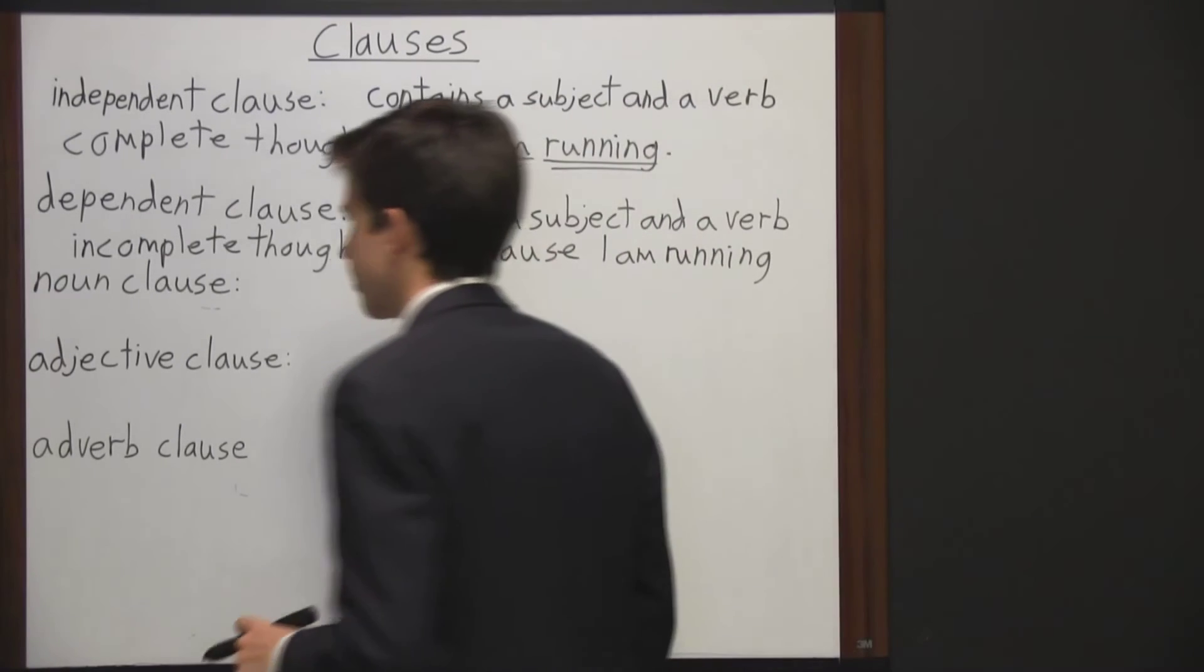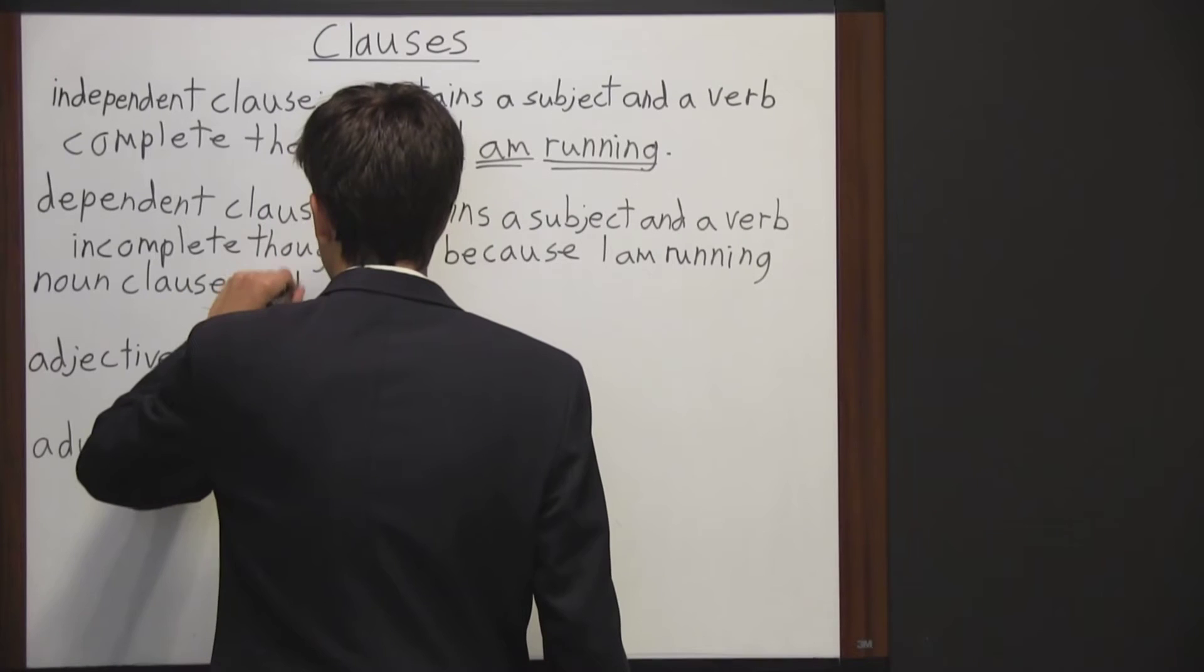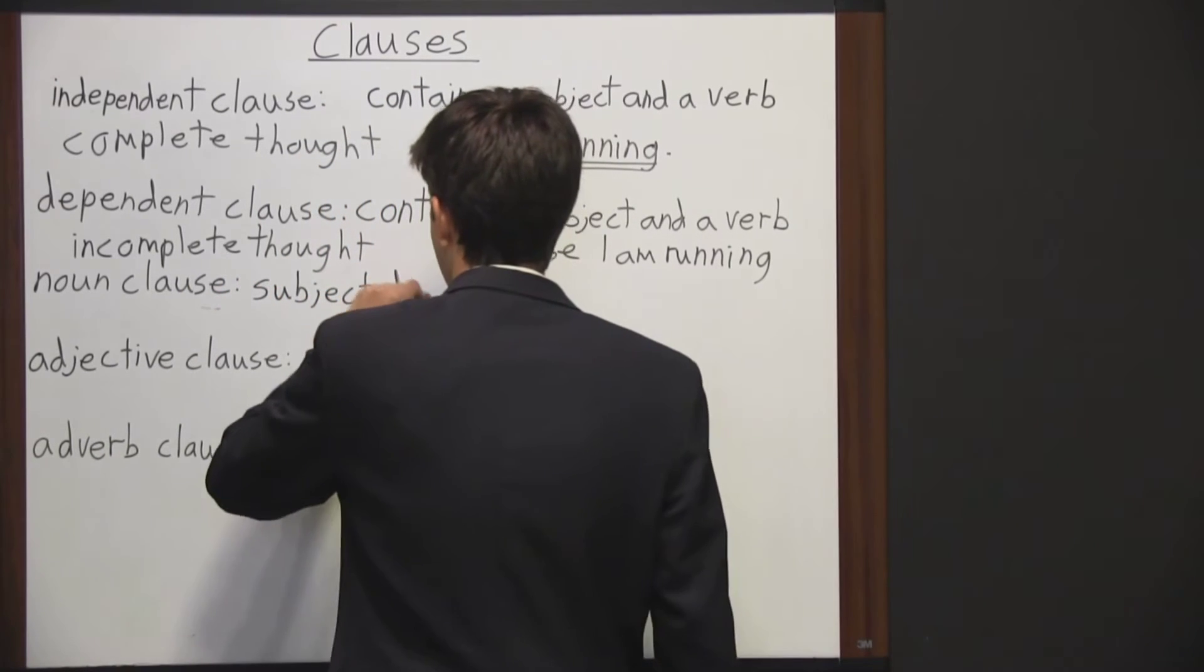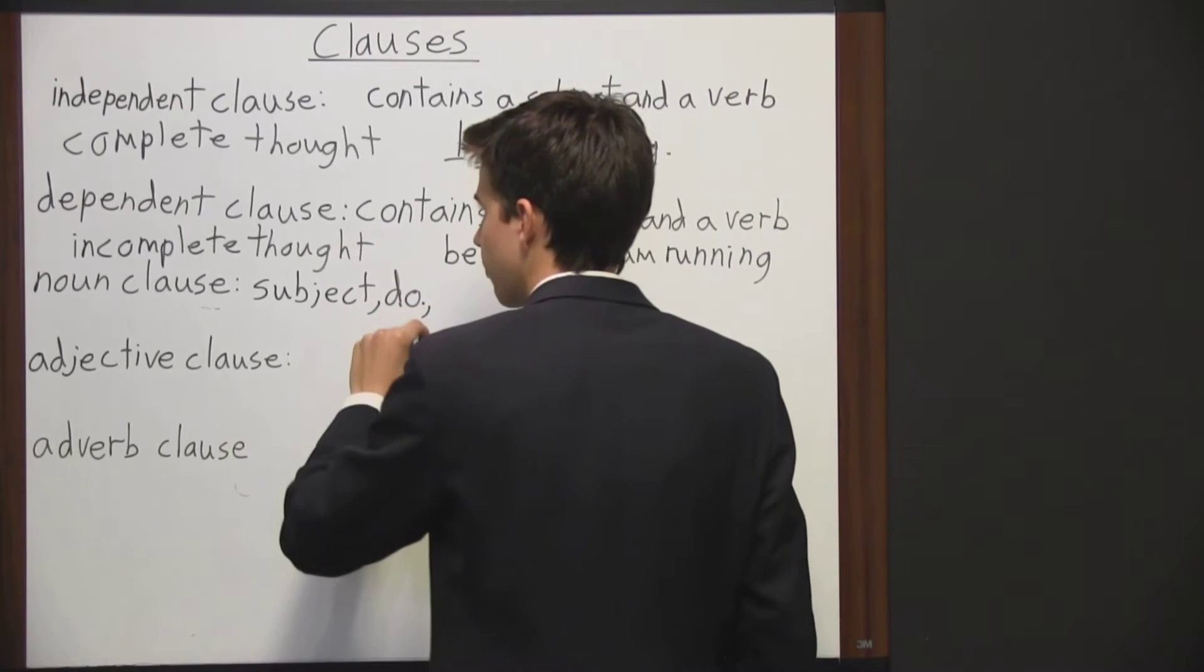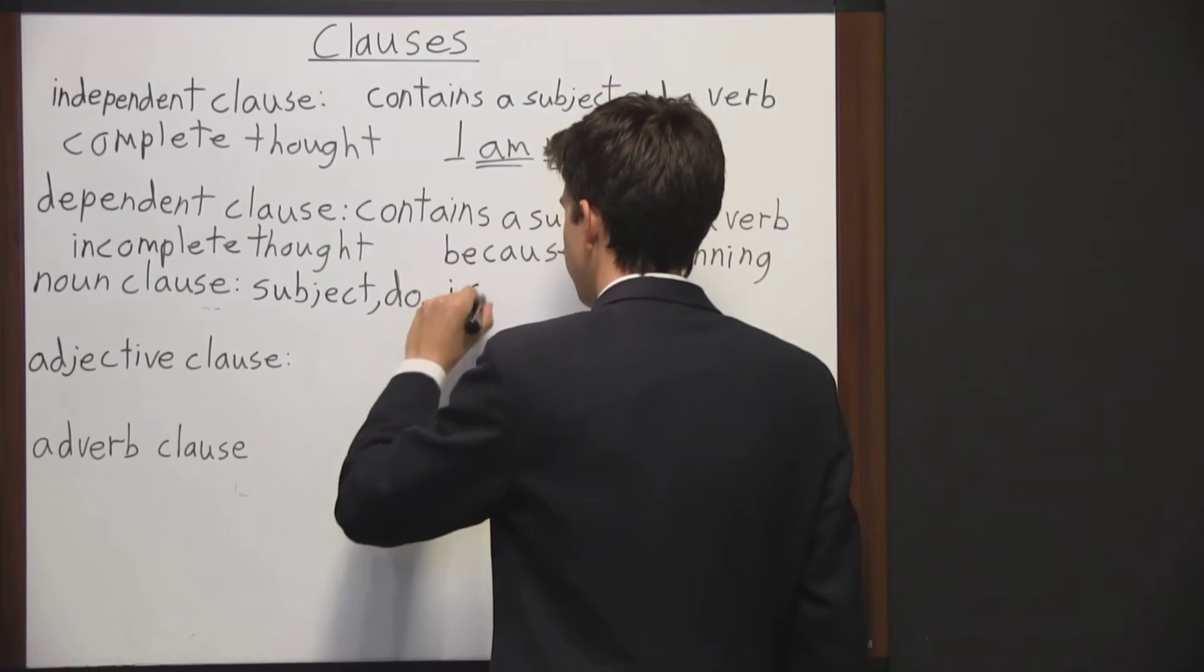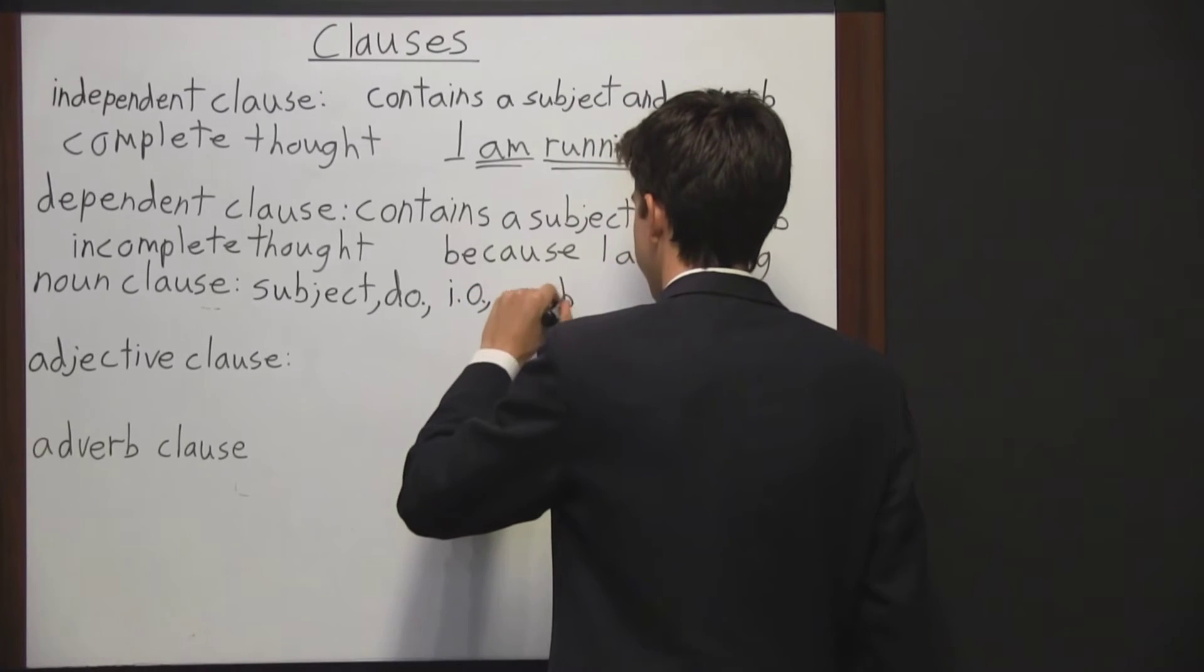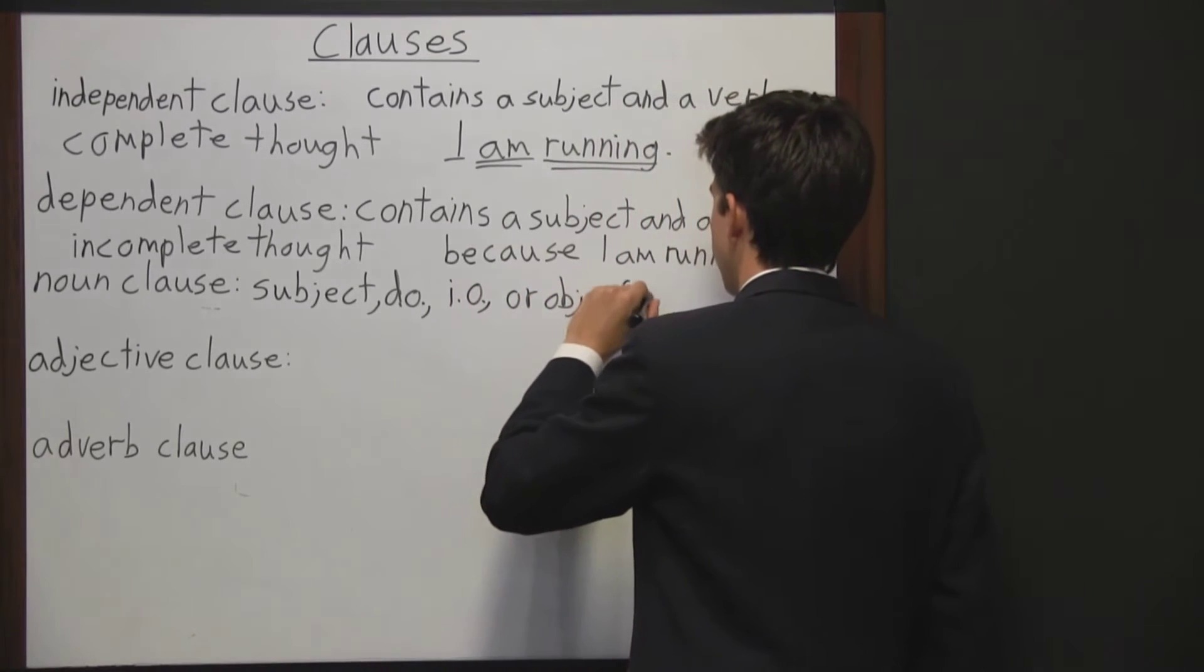Now a noun clause can be a subject, a direct object, which I will abbreviate DO, an indirect object, abbreviated IO, or an object of a preposition.